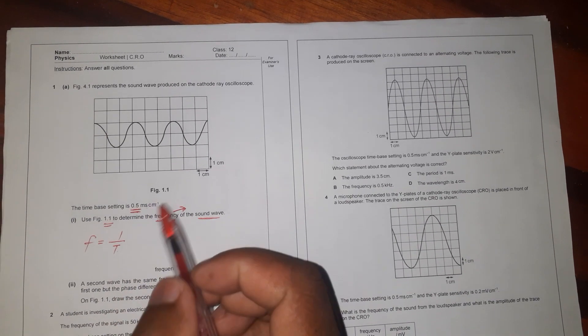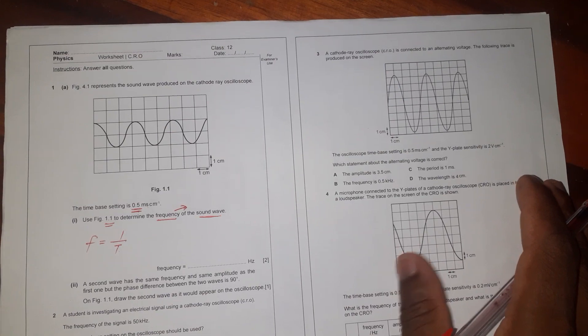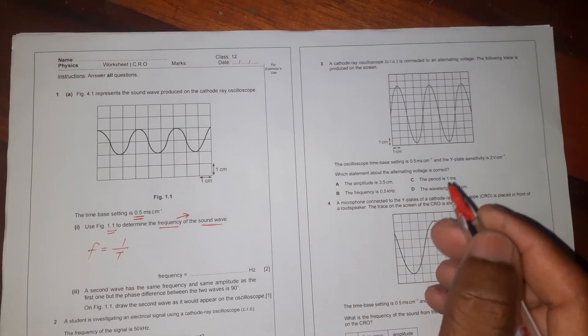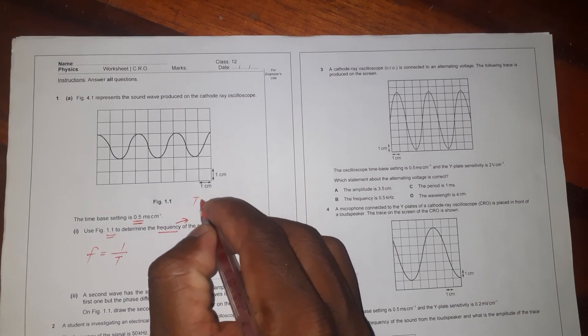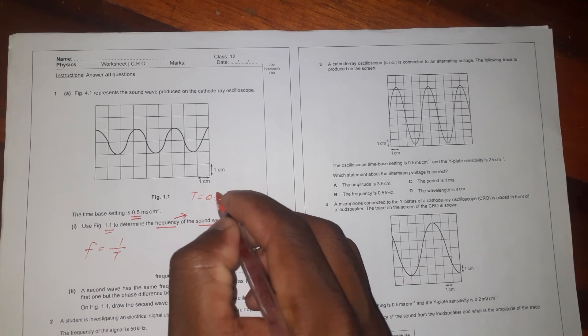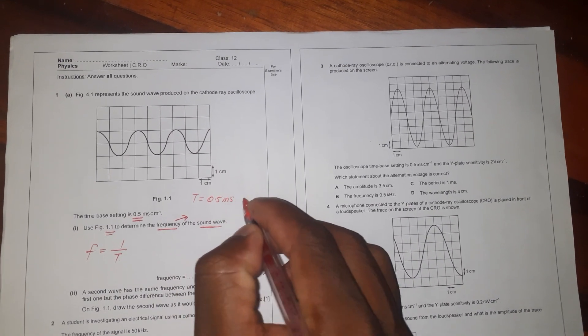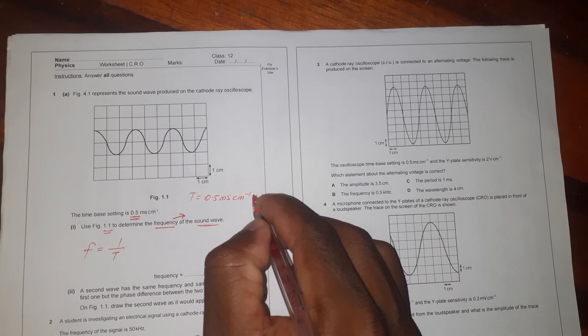So we can now write 0.5 milliseconds per centimeter and then we have to multiply that. Remember, with period, looking at this figure that we have, because you are told to use that figure.